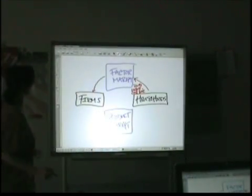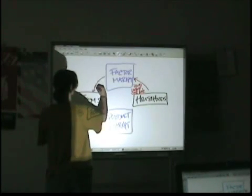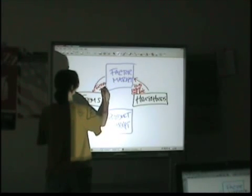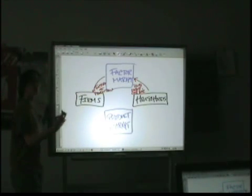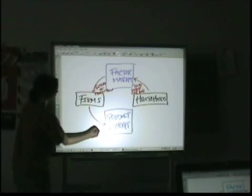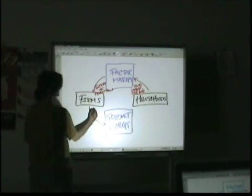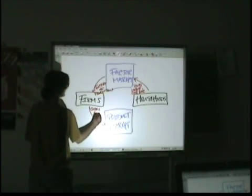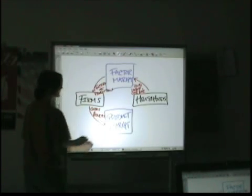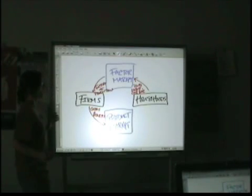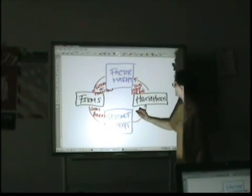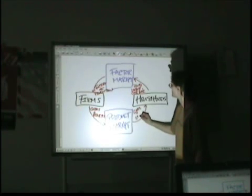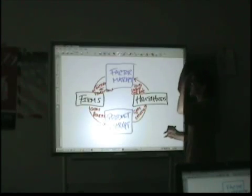That's what the firms are going to take from the factor market. We can just say factors of production. Now the firms are going to take those resources and turn them into finished goods. What are the firms selling in the product market? Goods and services. And that's what the households are going to take from the product market. That's half the picture.